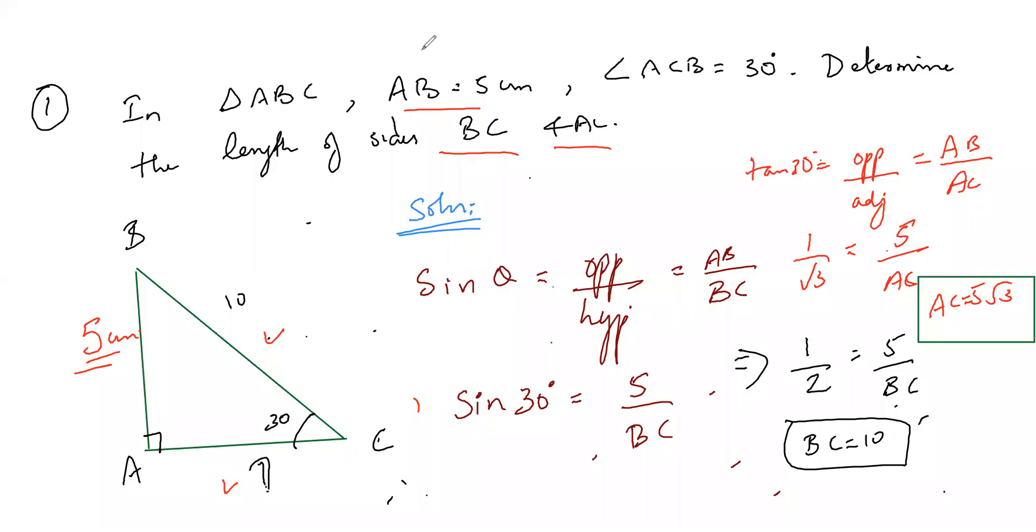So the alternate way of doing is, once you find this BC 10, we can use Pythagoras theorem also. But I use this tan 30 formula to show that we can use trigonometry function, find it faster. So this method is faster, but the only prerequisite is we have to know that sin 30, sin 45, those formulas will be very thorough.